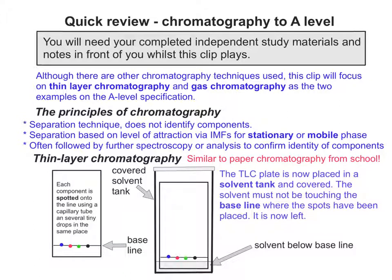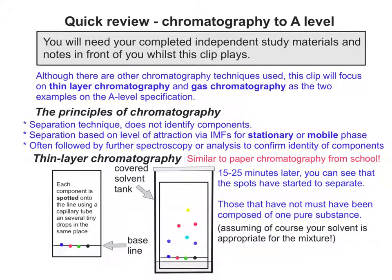The TLC plate is now put into a solvent tank and covered. The solvent can be a range of different things, dependent on what you suspect might be in the sample. The solvent mustn't be touching the baseline where the spots have been placed. A short while later you can see what's separated out. The blue component hasn't separated, so this must be a pure substance, assuming the solvent has been chosen correctly.